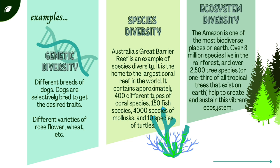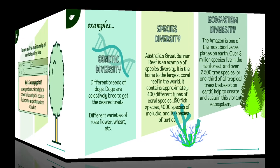Ecosystem diversity: the Amazon is one of the most biodiverse places on Earth. Over 3 million species live in the rainforests, and over 2,503 species — or one-third of all tropical trees that exist on Earth — help to create and sustain this vibrant ecosystem.